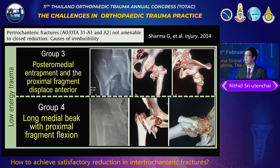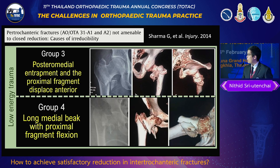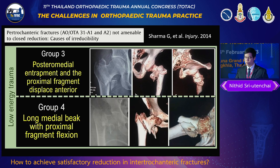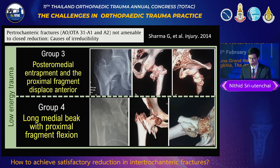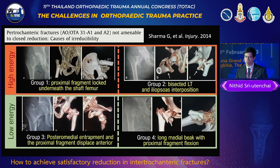The third and fourth groups occur with low-energy trauma in elderly patients. Group three involves posteromedial entrapment with the proximal fragment displaced anteriorly. Group four involves flexion deformity of the proximal fragment from the deforming force. This case can be classified into the third group.